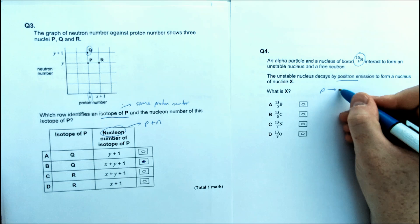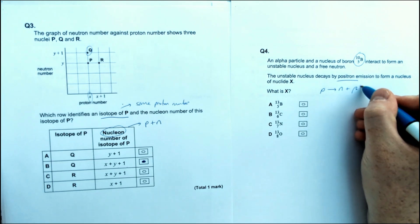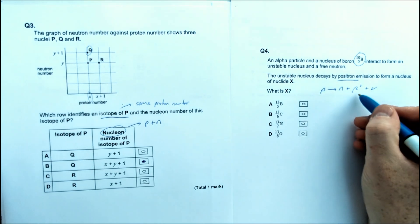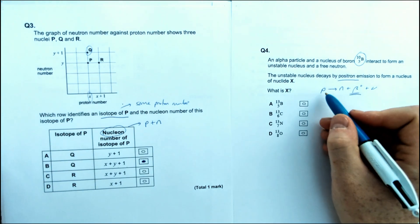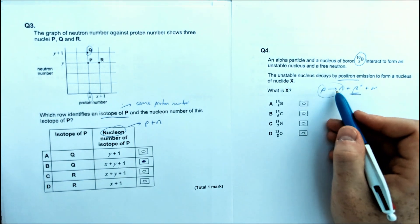It's a proton that decays into a neutron plus a positron and a neutrino as well.